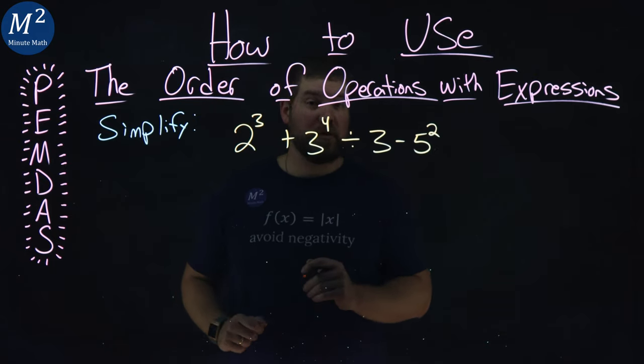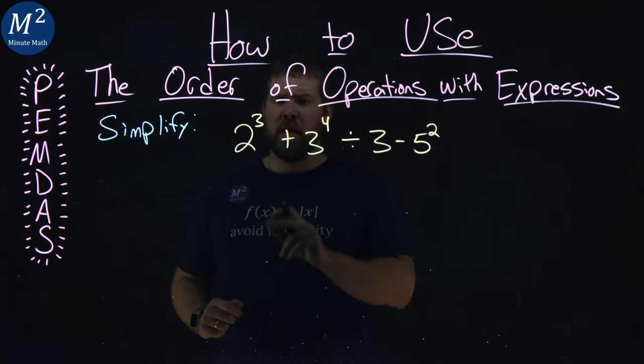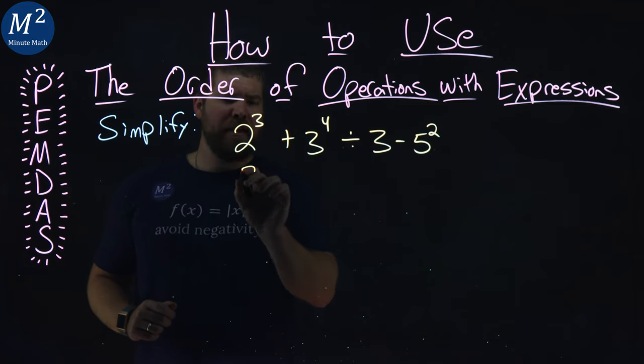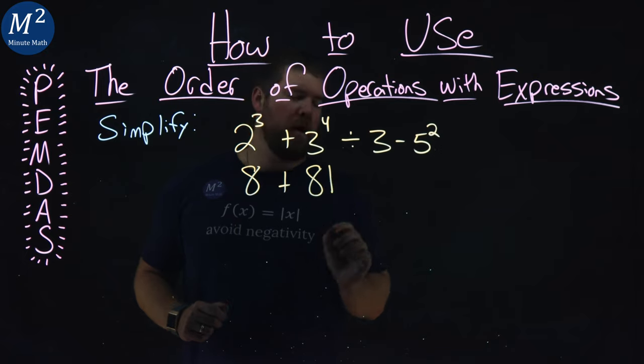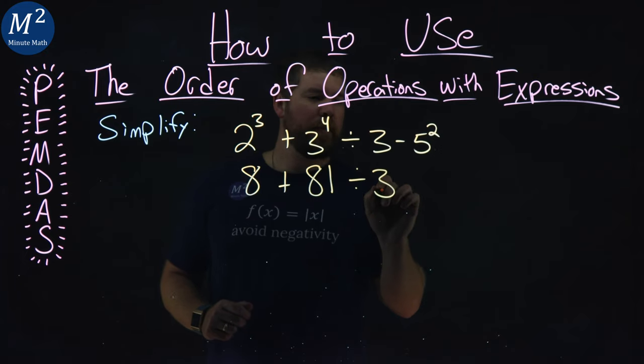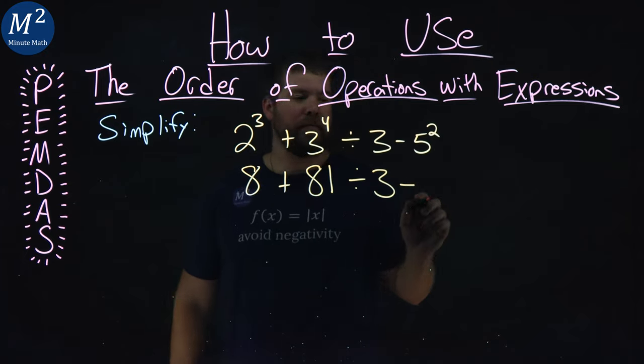So each one of these exponents I'm going to simplify. 2 to the third is an 8 plus 3 to the fourth is an 81. We divide by 3 here minus 5 squared is a 25.